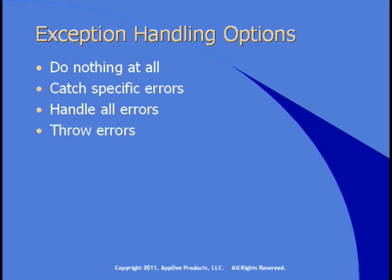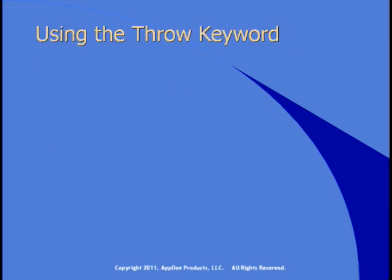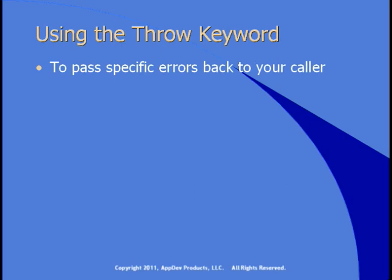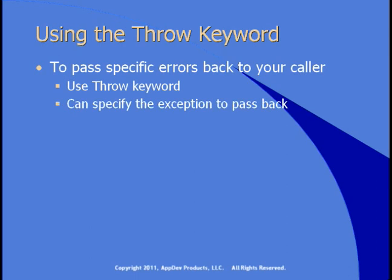There's a fourth option, and that's throwing errors yourself. So in addition to handling errors, you have the ability to raise errors yourself in your code. To pass a specific error back to calling code, you use the throw keyword. You can specify the exception that gets reported back to the calling code.